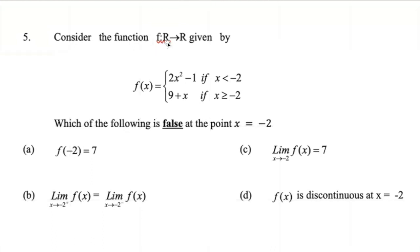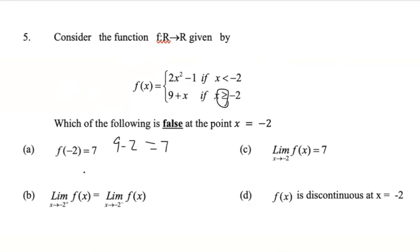Now we consider a function f such that r maps to r, and we're asked which of the following is false at the point x equals negative 2. So f of negative 2 is 7 — we replace x with negative 2 to get 7. This statement is true, and since it asks which is false, that statement adds up as false.